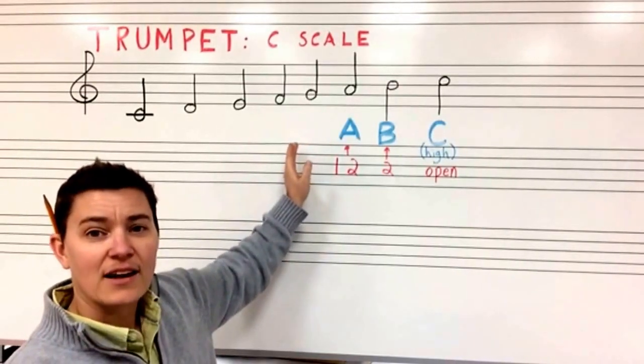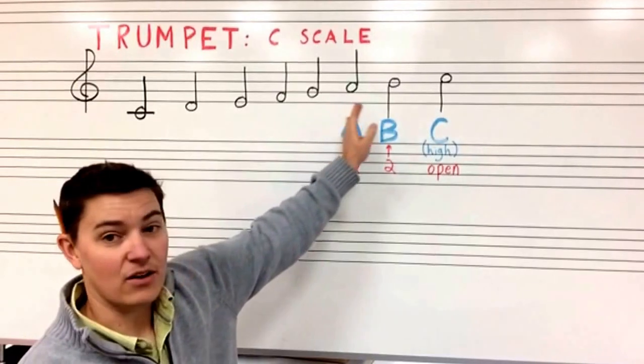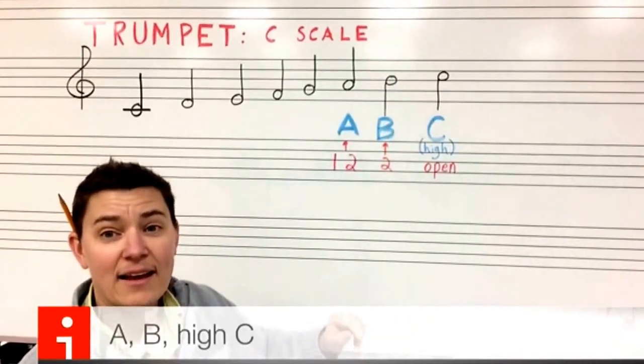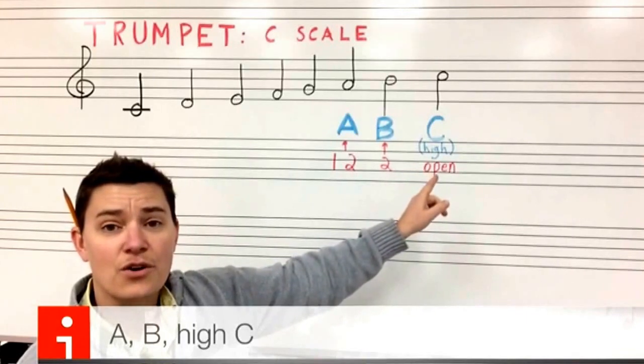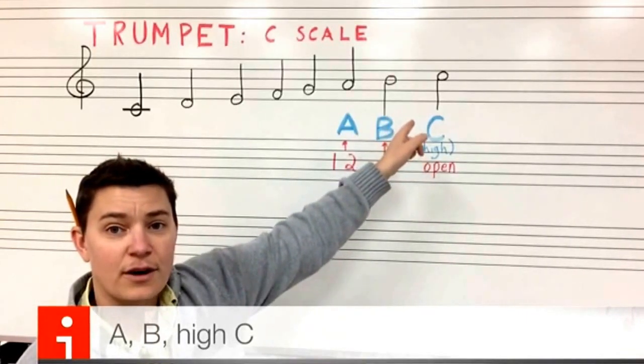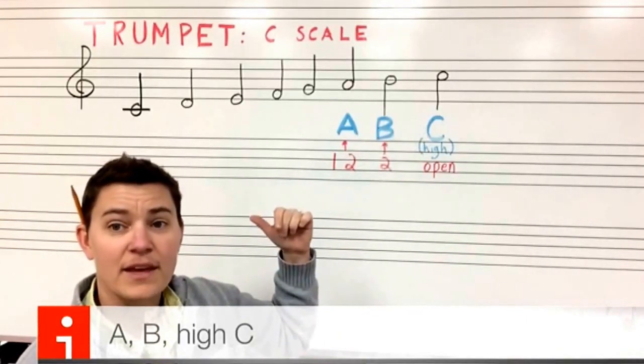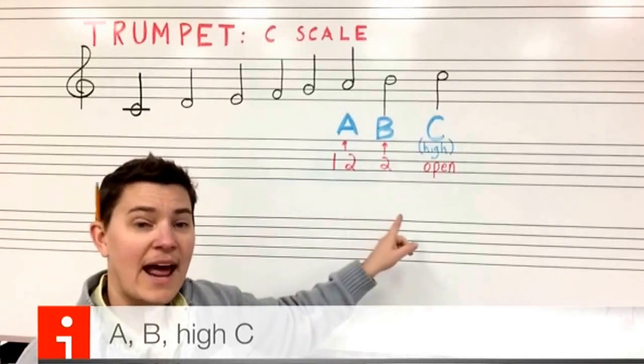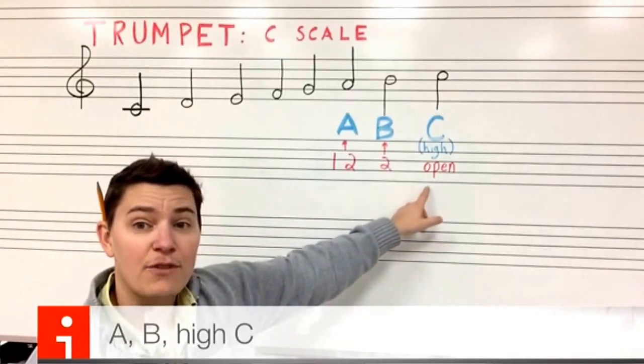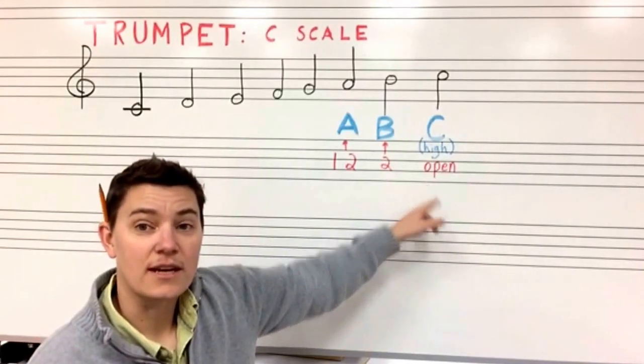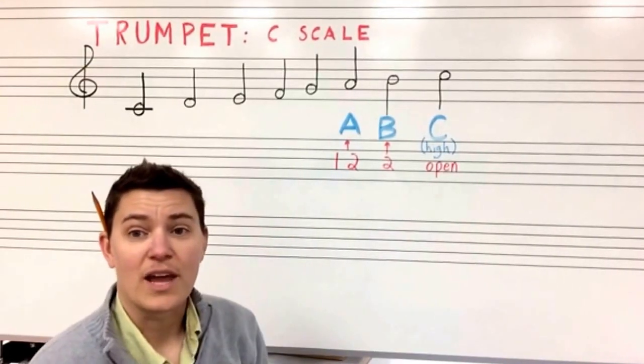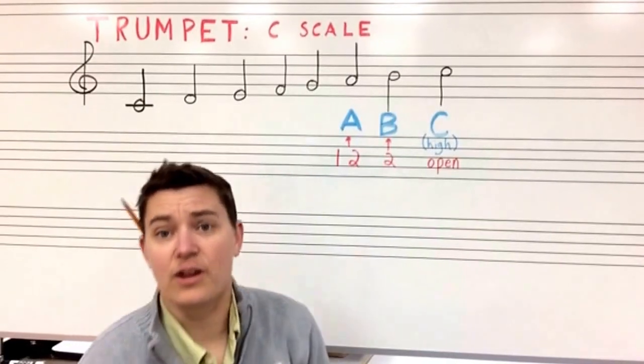Now we're going to add the top three notes of our scale: A, high B, and high C. You'll notice that the high C looks different from the low C. It also sounds different, but it has the same fingering of no fingers, just like G and low C. So that means we're relying on your embouchure to get tighter in order to go up.